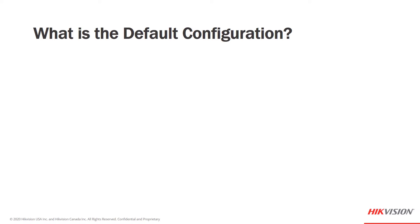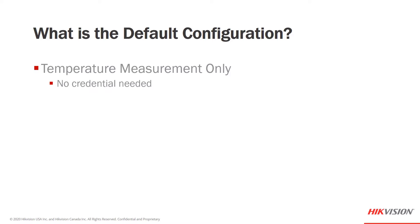So what is the default configuration? Basically, it's temperature measurement only. That's all it's doing, even though this is an access control terminal and a highly accurate thermographic camera working together. The out-of-box default configuration is really temperature measurement only. No credential other than your temperature is needed to pass, gain access, or to alert someone that you're okay to continue on into a building. It does not have to control a door, however it can.